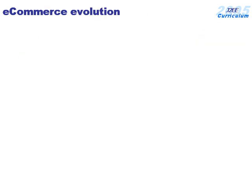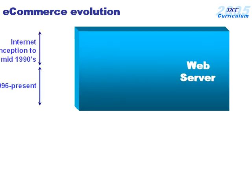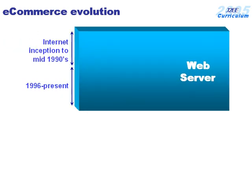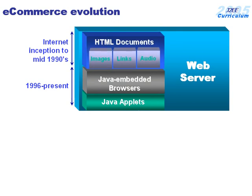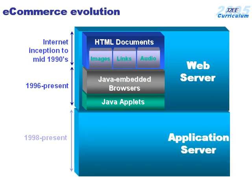Let's look at the evolution of the e-commerce world. Initially in the mid-part of the 90s, we had the web server, which we used to contain all of our static content HTML documents and Java applets. The latter part of the 90s saw the evolution and implementation of a brand new type of server known as the application server, which gave us capabilities that the web server could never possibly possess.